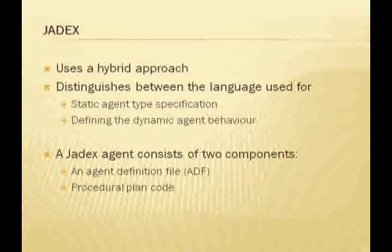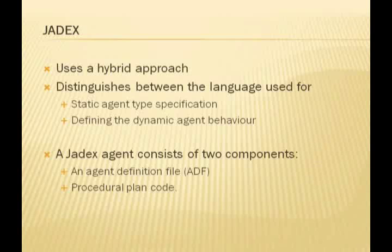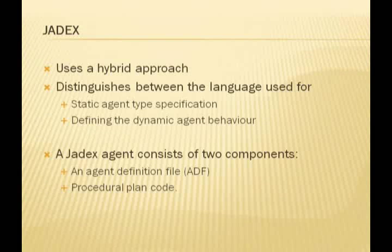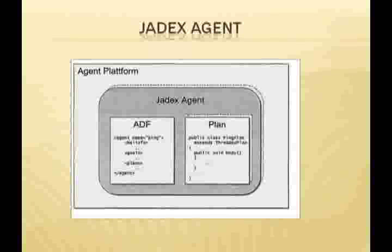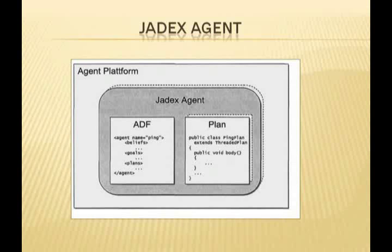Another language is JADEX. JADEX is not based on a new agent programming language. Instead, a hybrid approach is chosen, distinguishing between the language used for static agent type specification and the language for defining dynamic agent behavior. According to this distinction, a JADEX agent consists of two components: an agent definition file for the specification of beliefs, goals, and plans, and on the other hand, procedural plans.